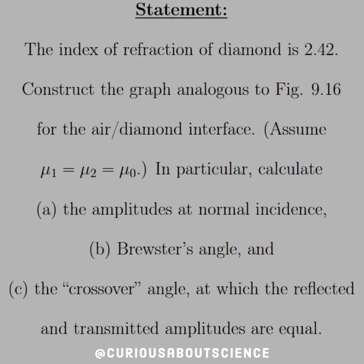So while we're still dealing with the graphing of ratios, let's dive into our next statement. The index of refraction of a diamond is 2.42. Construct a graph analogous to figure 9.16 for the air-diamond interface. Assume mu1 equal mu2 equal mu0. In particular, calculate the amplitude at normal incidence, the Brewster's angle, and the crossover angle at which the reflected and transmitted amplitudes are equal.